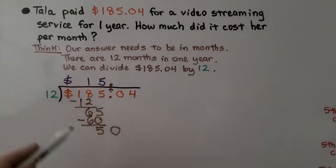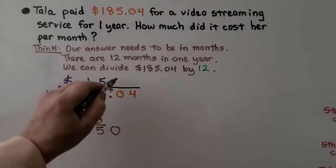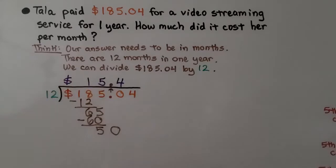How many times can 12 fit into 50? 12 times 4 is 48. We can put a 4 here above the 0 we drop down. We can subtract that 48. We get a 2.